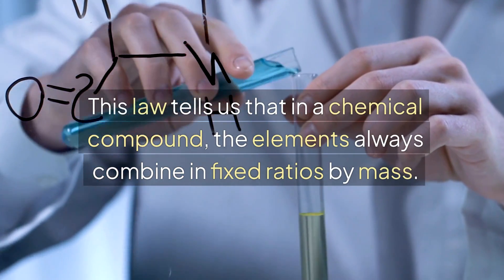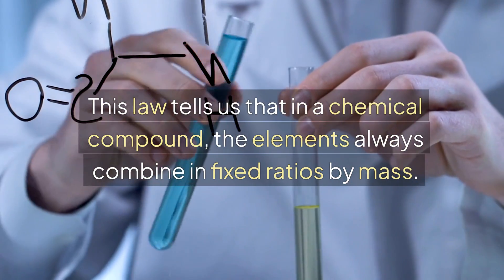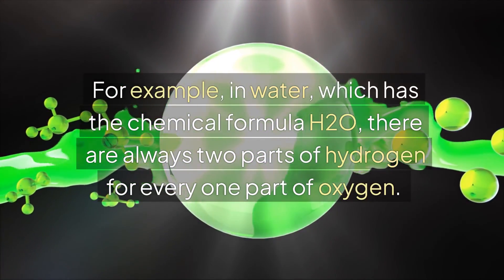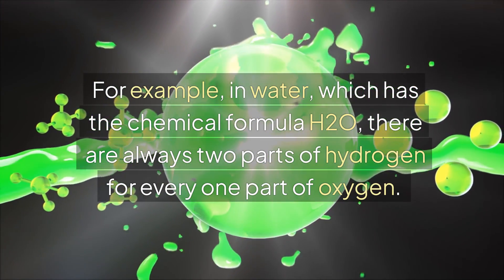This law tells us that in a chemical compound, the elements always combine in fixed ratios by mass. For example, in water, which has the chemical formula H2O, there are always two parts of hydrogen for every one part of oxygen.